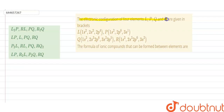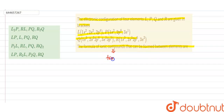The question gives the electronic configurations of four elements L, P, Q, and R. We have to find the formula of the ionic compound that can be formed between the elements. First, what we need to know is: what are ionic compounds? Ionic compounds are those compounds which have been formed by the transfer of electrons.